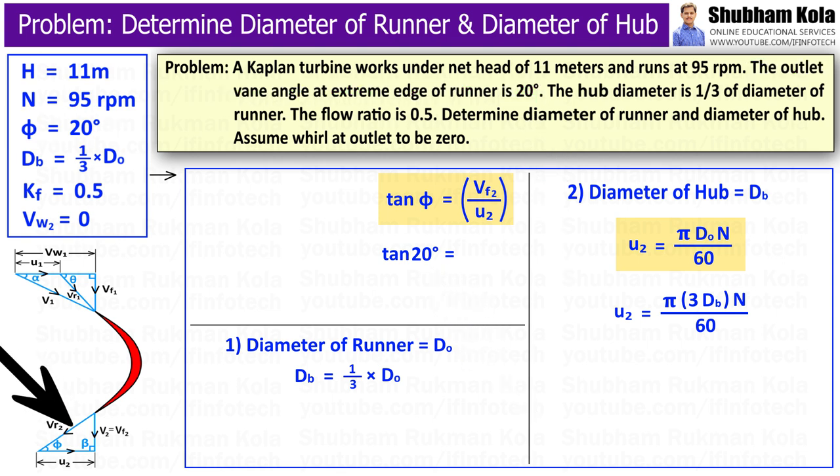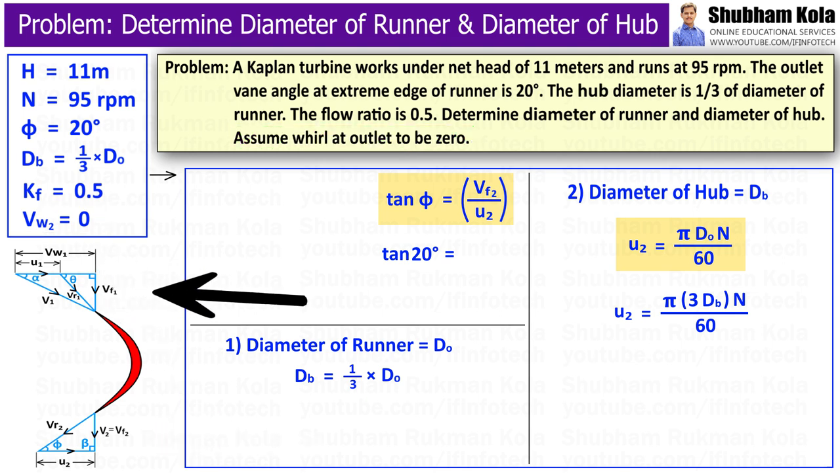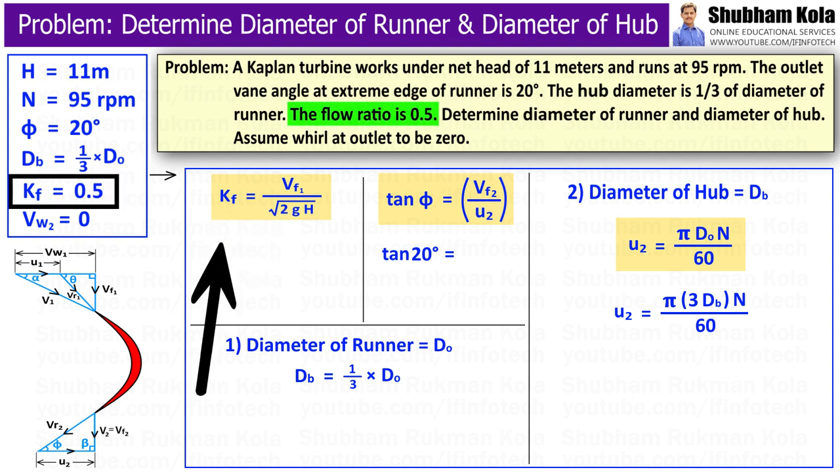And for Kaplan turbine, α equals 90 degrees, hence Vw2 equals 0 and Vf2 equals Vf1. And Vf1 can be calculated from flow ratio, which is given in question.